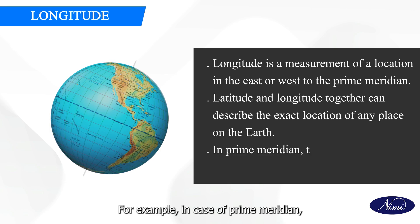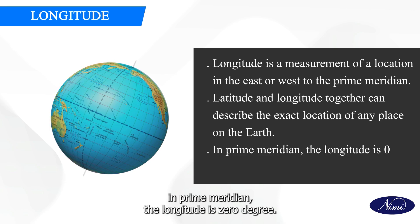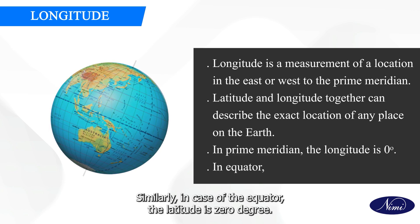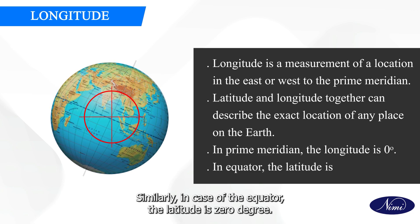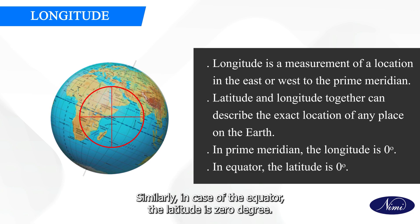For example, in the case of the prime meridian, the longitude is 0 degrees. Similarly, in the case of the equator, the latitude is 0 degrees.